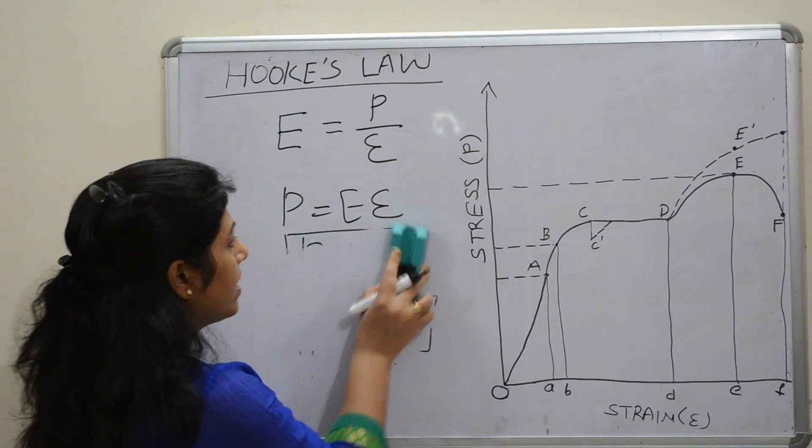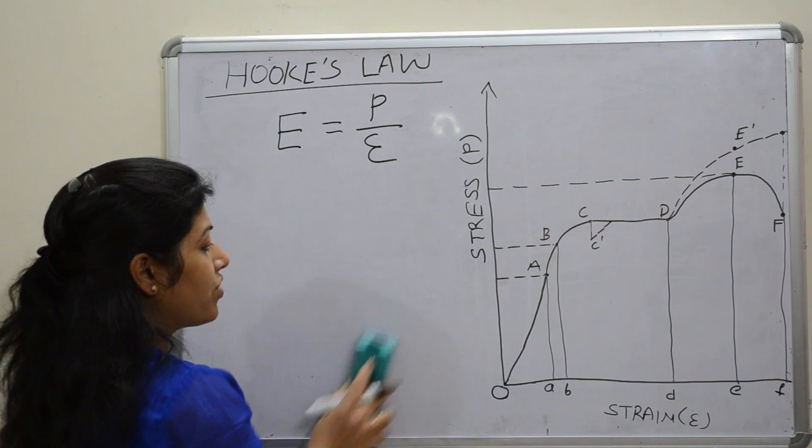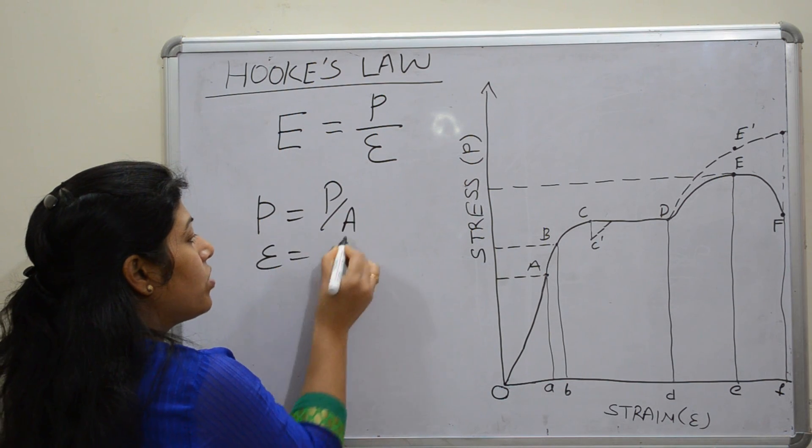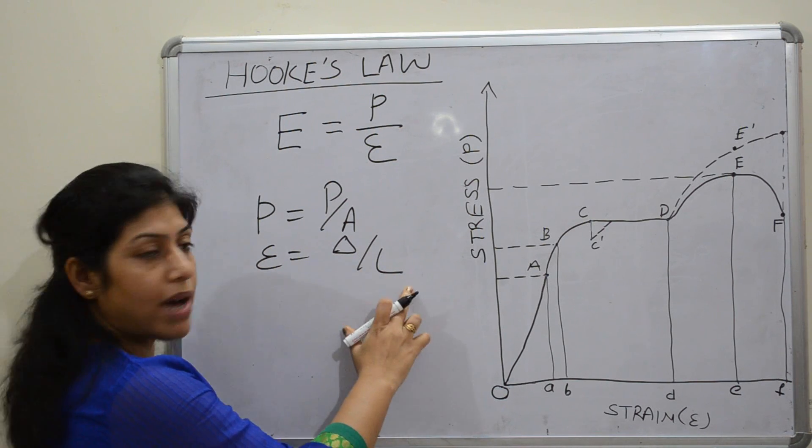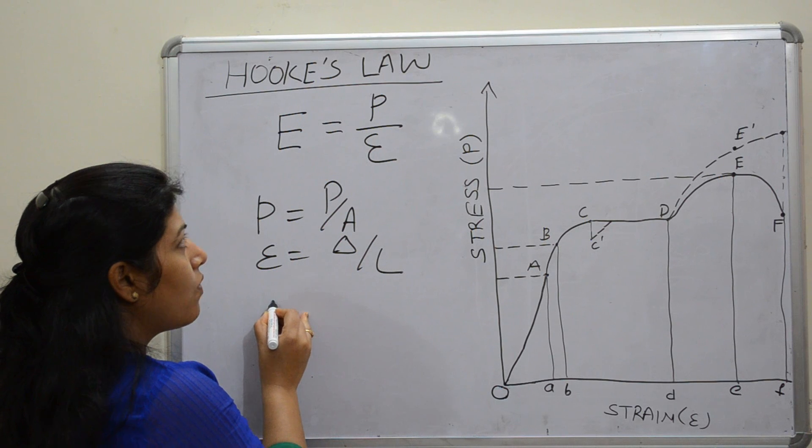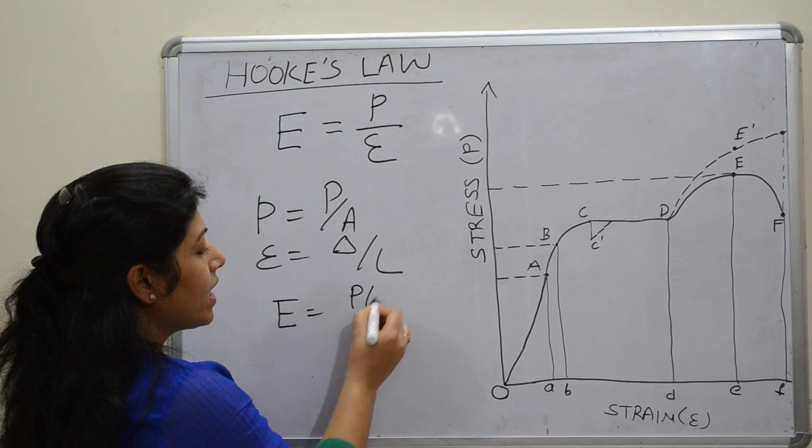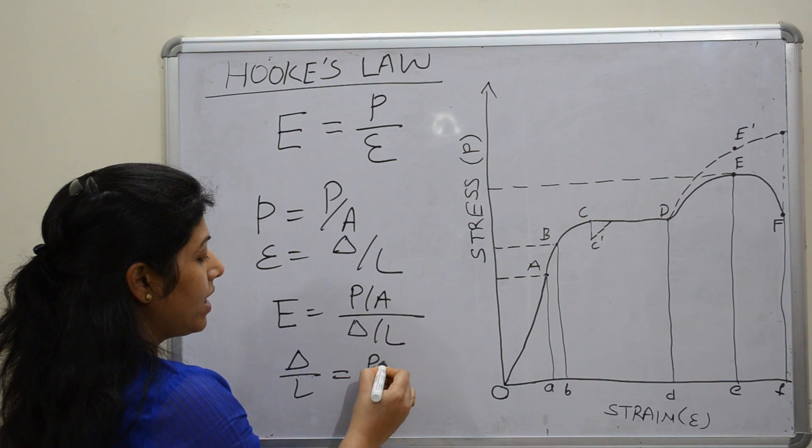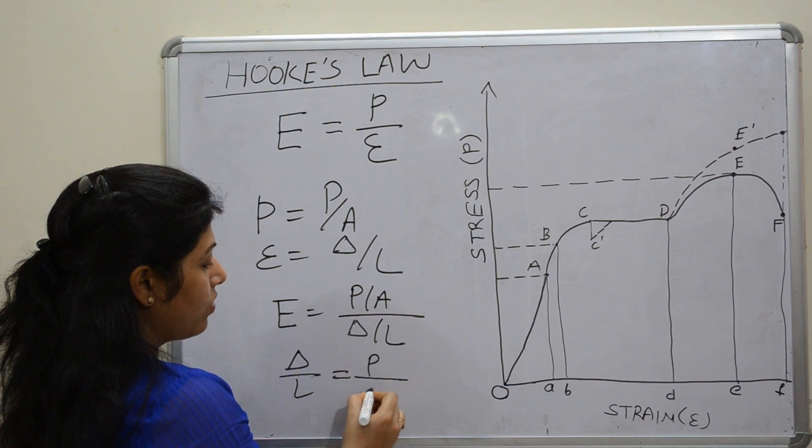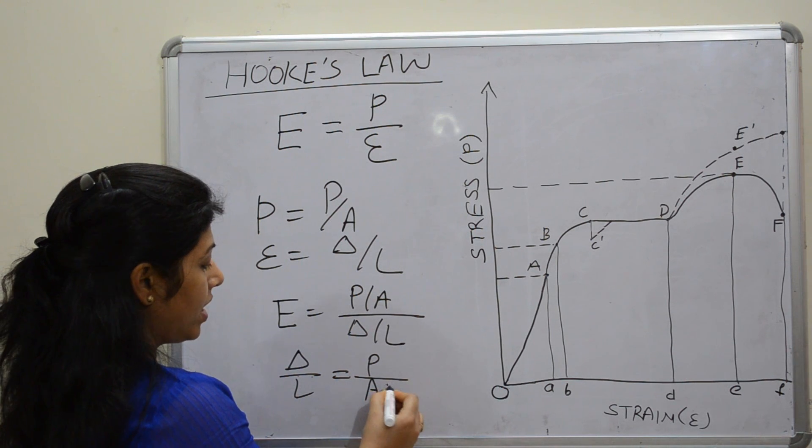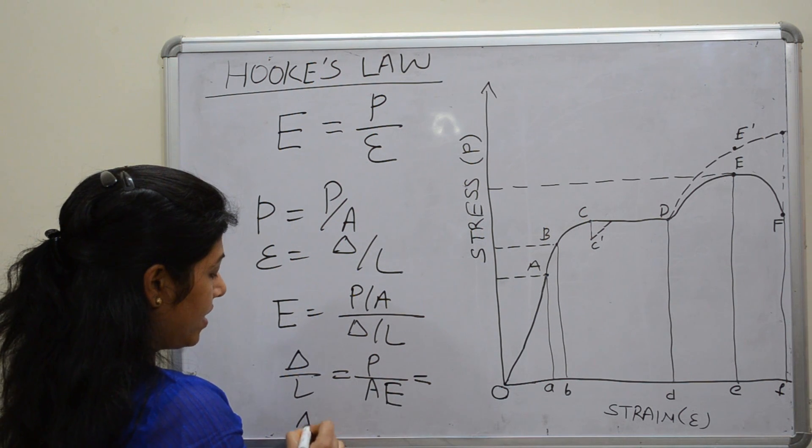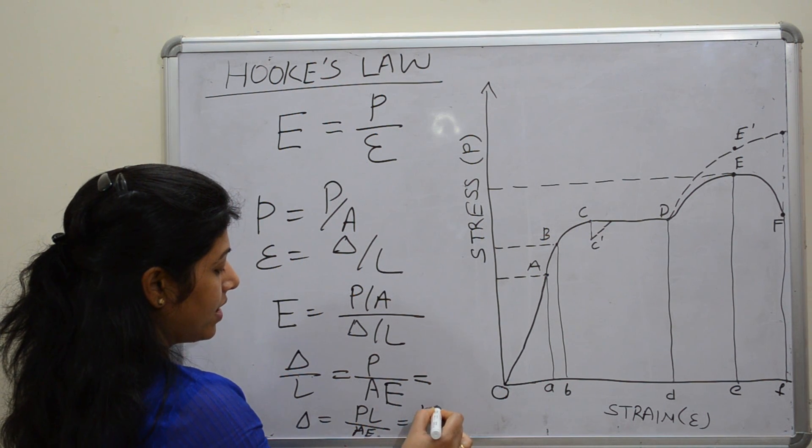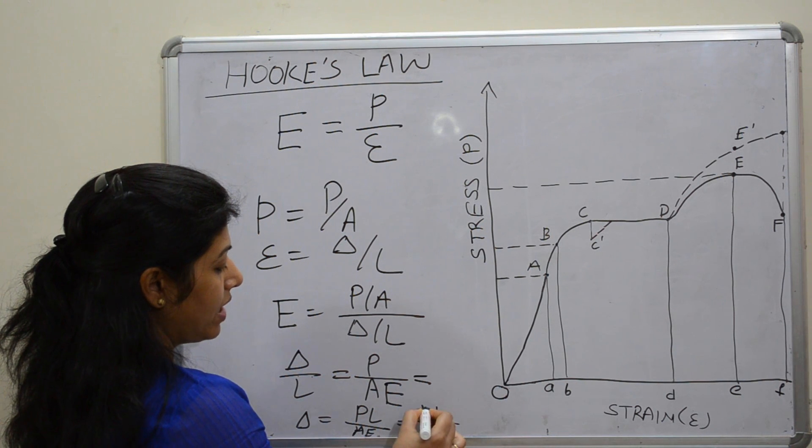Here if we replace this stress equal to force per unit area, small p equal to P by A, and strain equal to change in dimension by original dimension or change in length by original length, then what will be the equation? E equal to P by A divided by del by L. This will be equivalent to del by L equal to P by AE, or we can write del equal to PL by AE. That is also equivalent to small p times L by E.